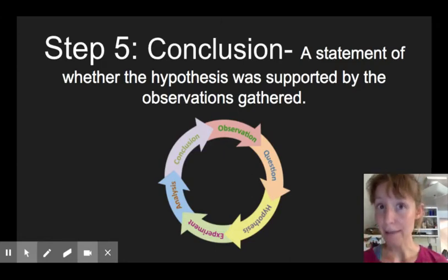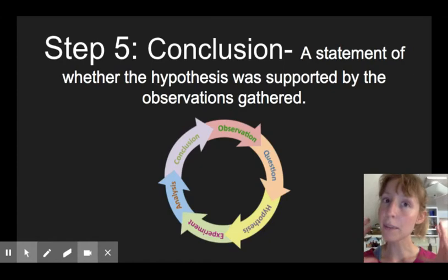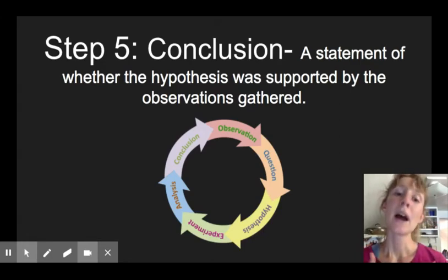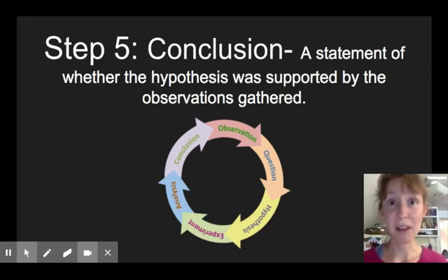But step five, the last step of the scientific method is to form a conclusion. So based on analyzing that data, based on your graph, does the hypothesis hold? Was the hypothesis true? Does light intensity affect plant growth? And if so, how? So this is usually a good solid paragraph of explanation that tells anybody else who's reading the scientific paper, what was the conclusion? What did they find out if they found out anything?